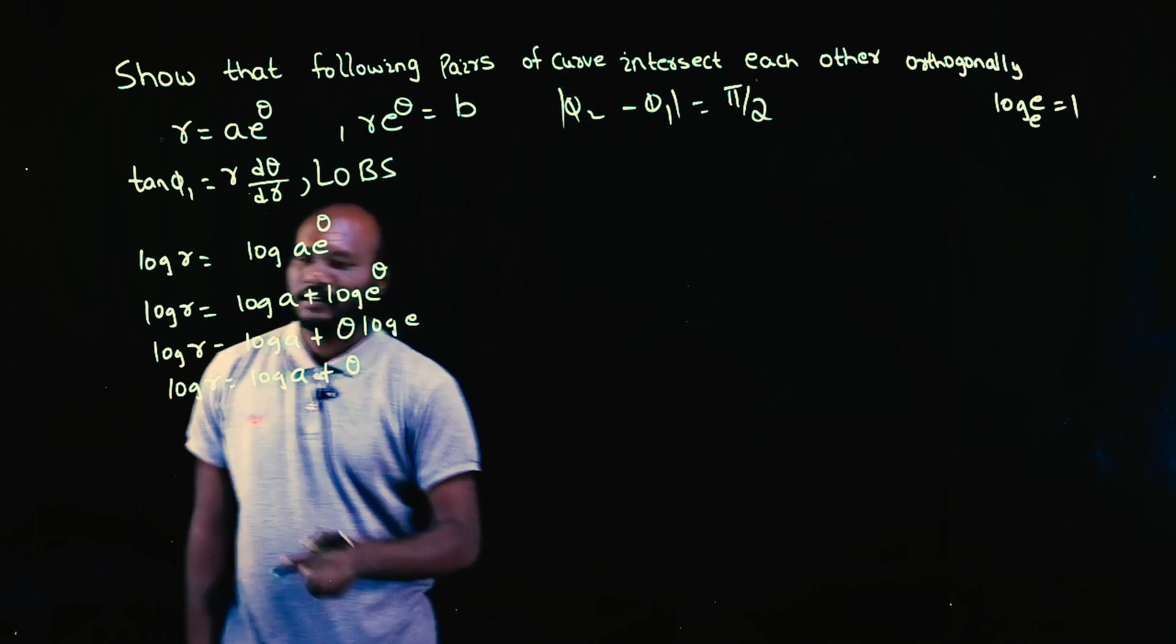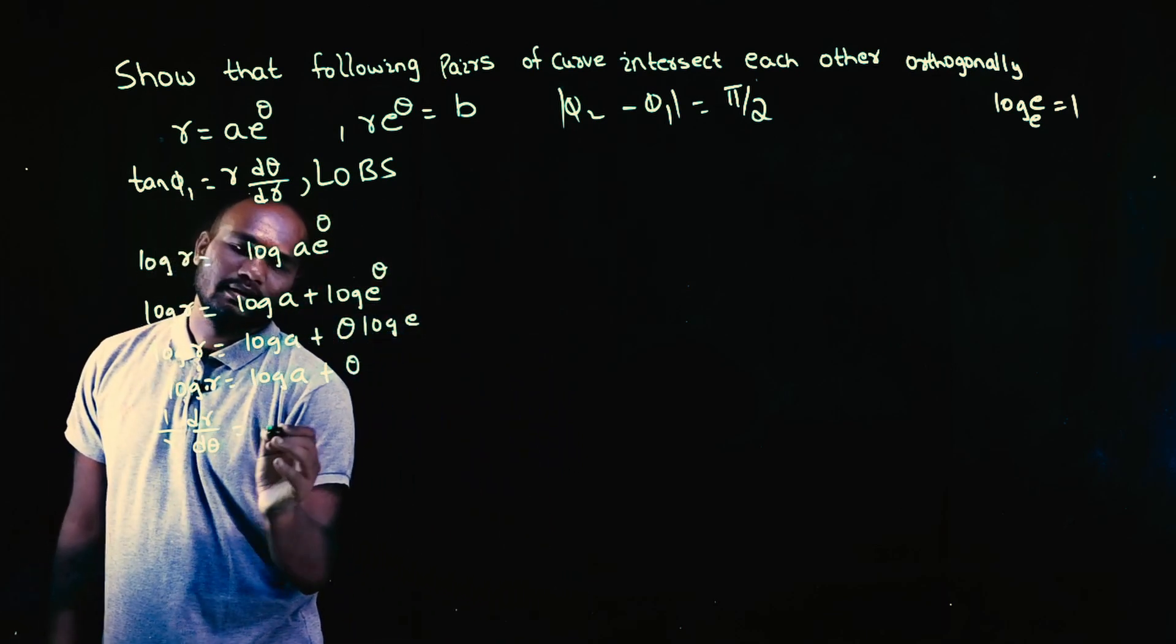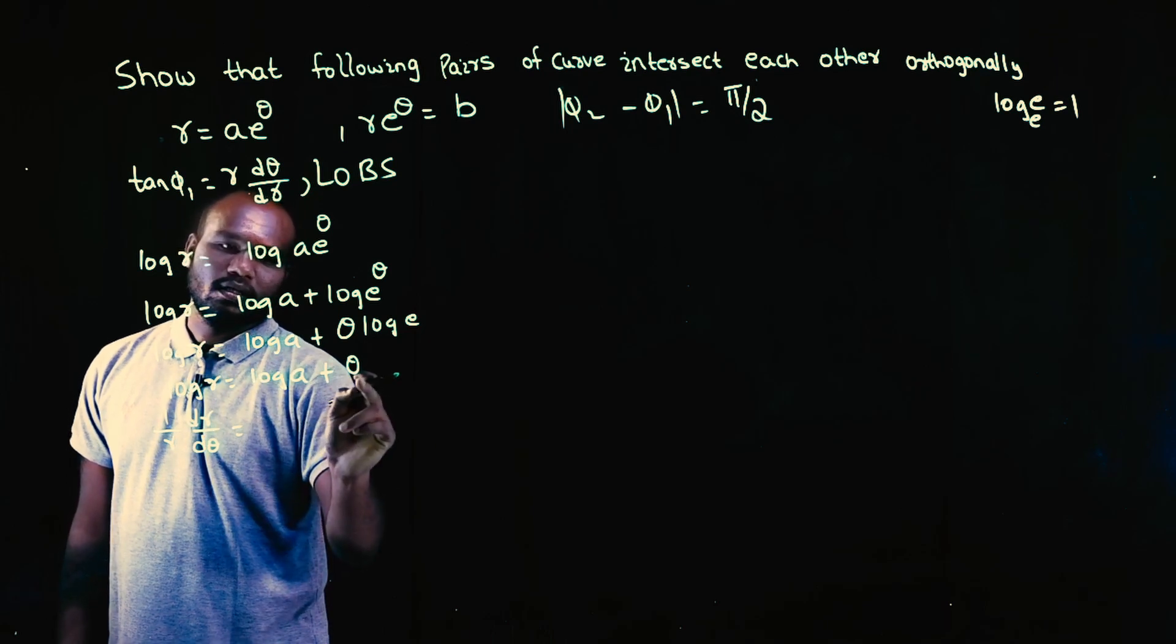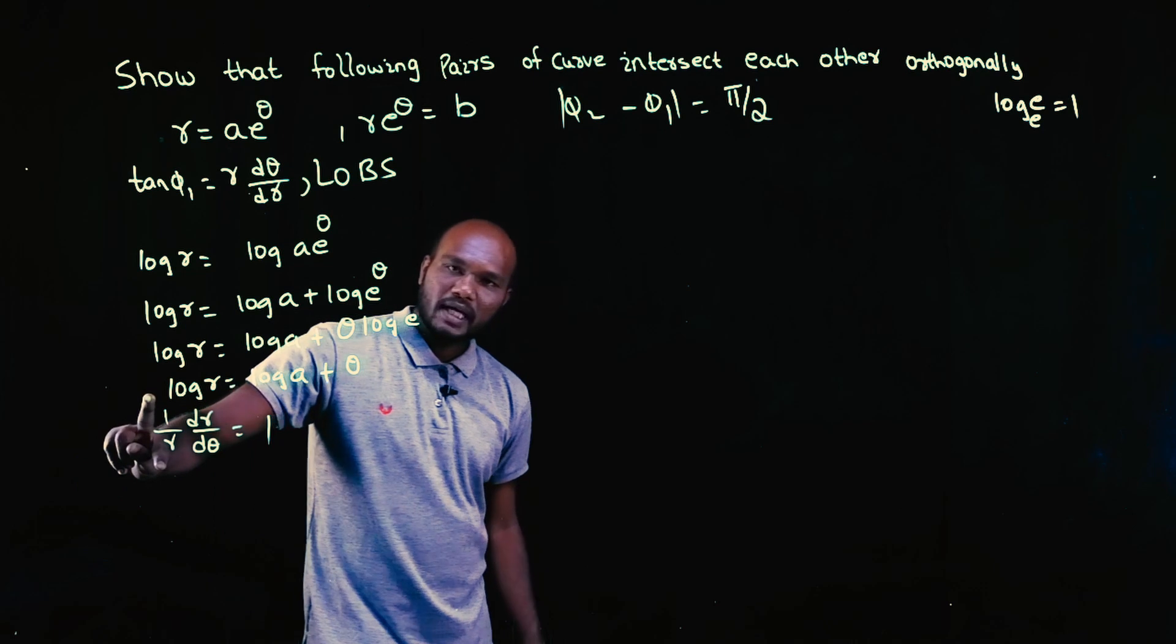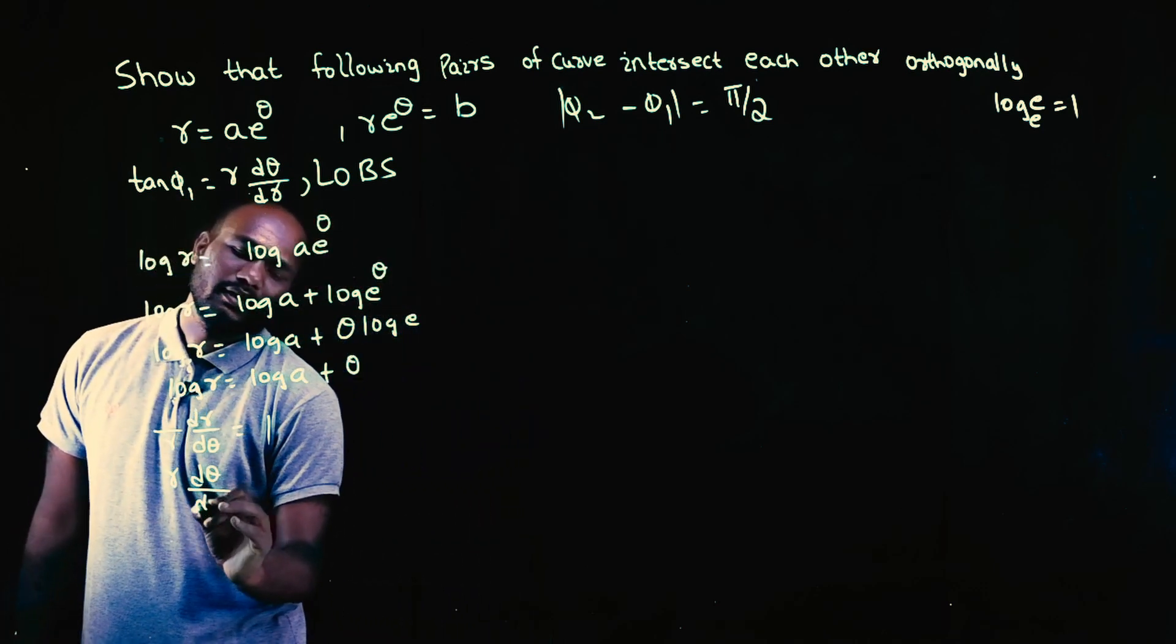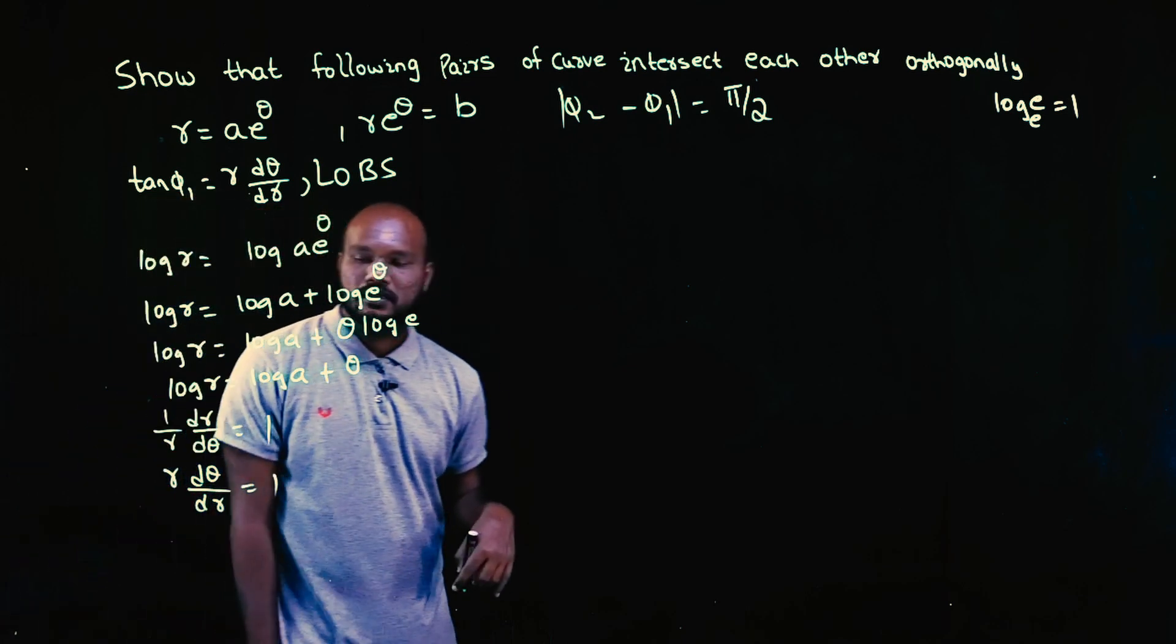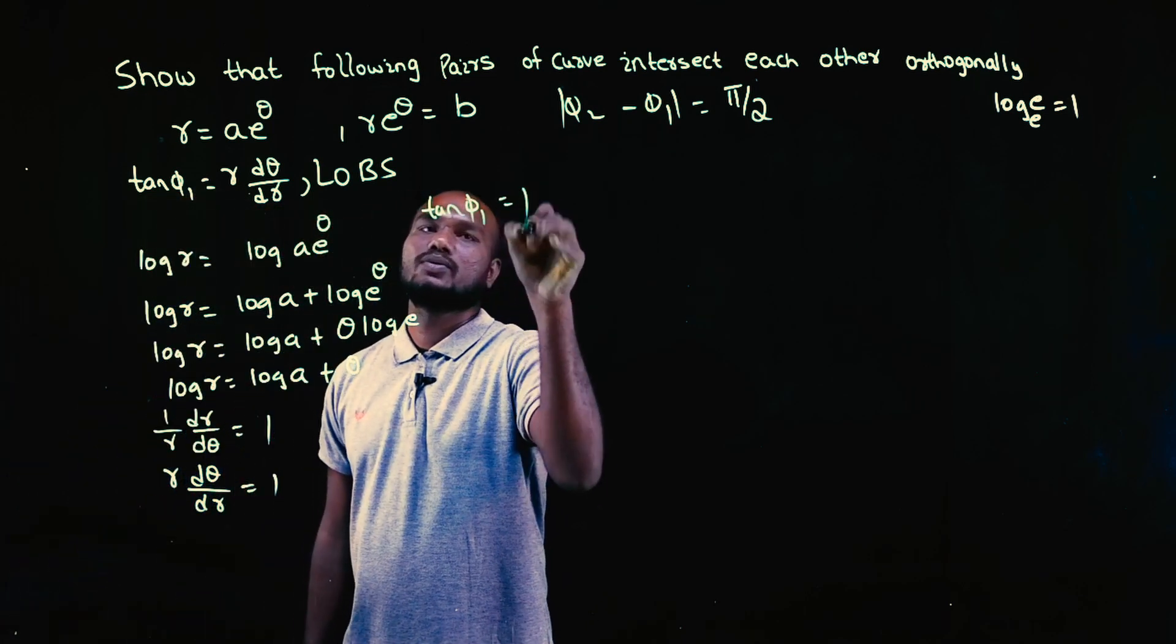Now we have to differentiate. Log r differentiation is 1 upon r dr by d theta. Log a differentiation is 0, right? Theta differentiation is 1. Am I interested in 1 by r? No, I am interested in the inverse: r times d theta by dr is equal to 1. So r times d theta by dr is what? Tan phi 1 is equal to 1.